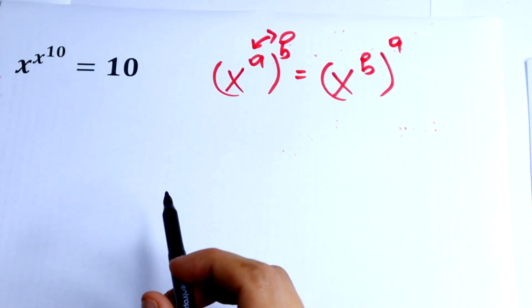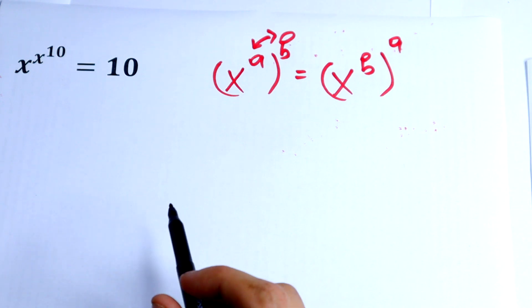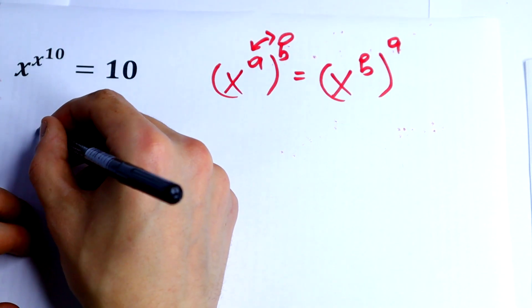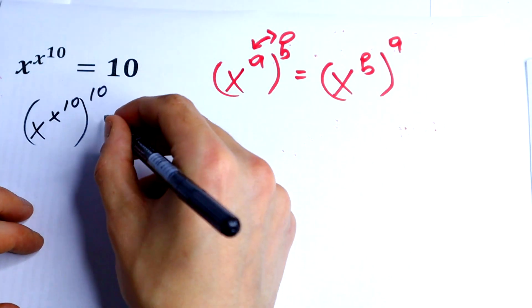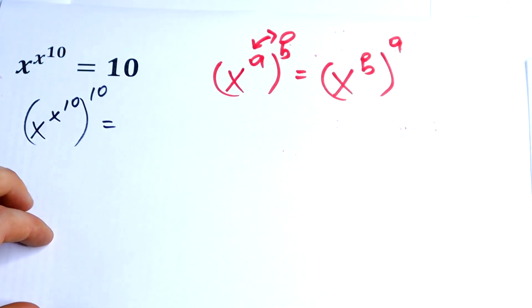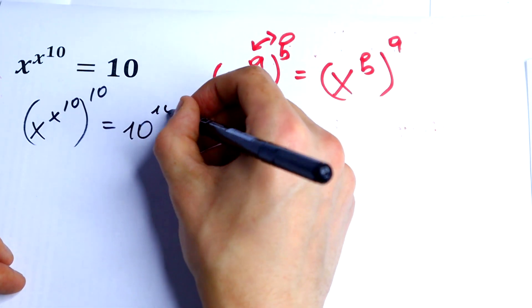But what are we going to do next? We raise both sides to the 10th power. Just take a look. x to the power x to the 10th power, raised to the 10th power, and we need to raise 10 to the 10th power on the right side.